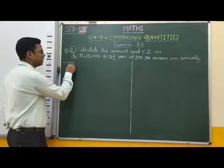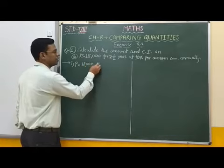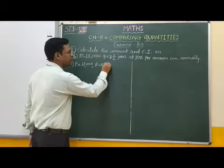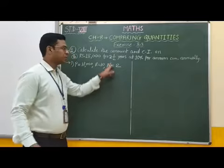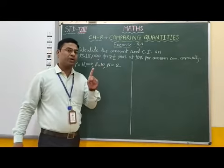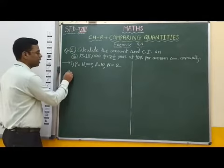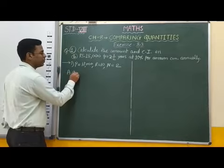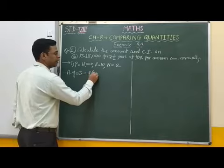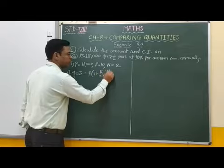First of all, principal is 18,000, rate of interest is 10, and number of years is 2. We have to find the amount at compound interest for 2 years. The formula for amount at compound interest is: A = P × (1 + R/100)^N.